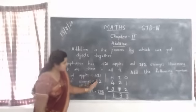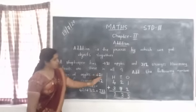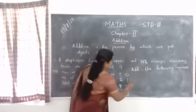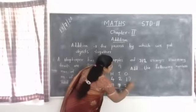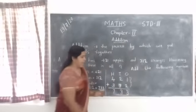Now, what are the numbers? 421 and 312. So if you add these two numbers, you will get the answer.